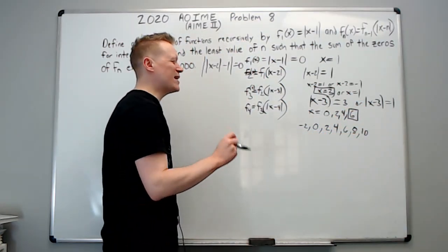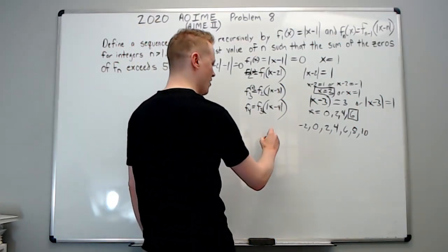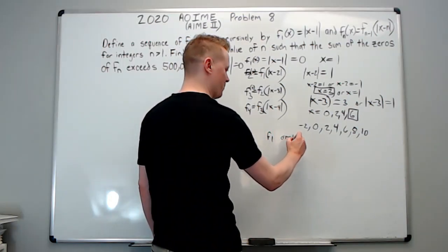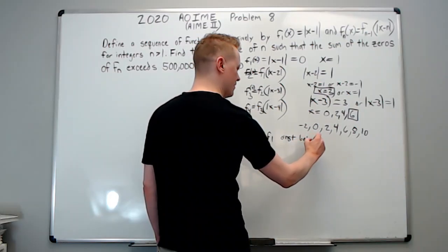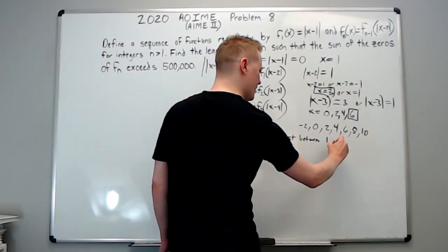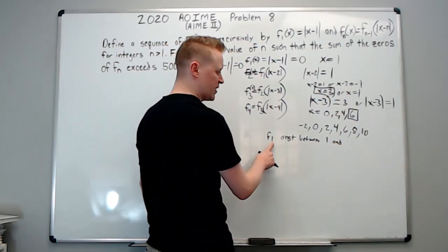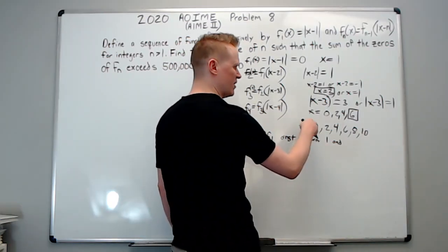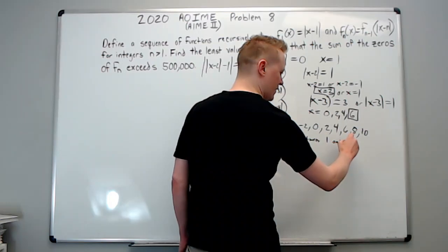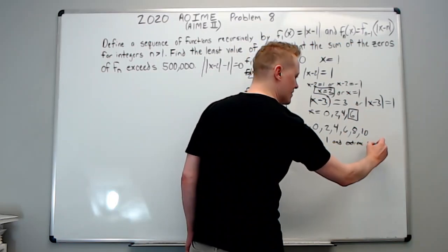For F_1 of X, the distance between one, which is the subscript here, a distance between one and the largest and smallest zero was zero. So, and yeah, extreme zeros, we'll call them, was zero. Now we don't want to write all that out every time. So for F of two, it was the distance from two and the extreme zeros was one. Let's go back and check.